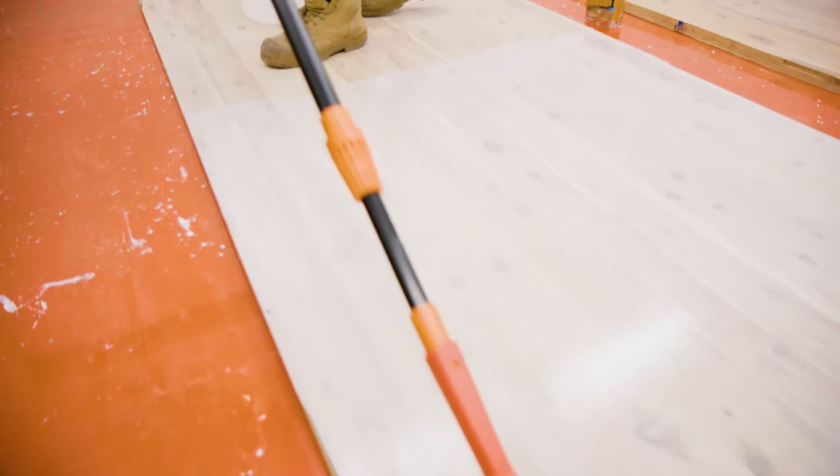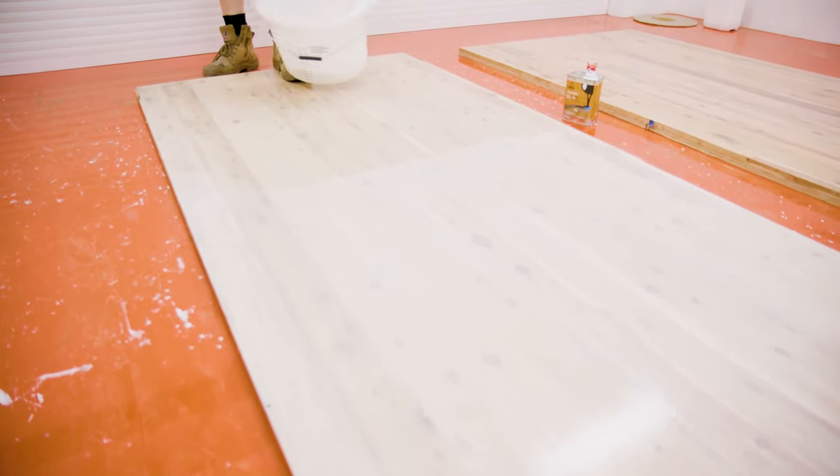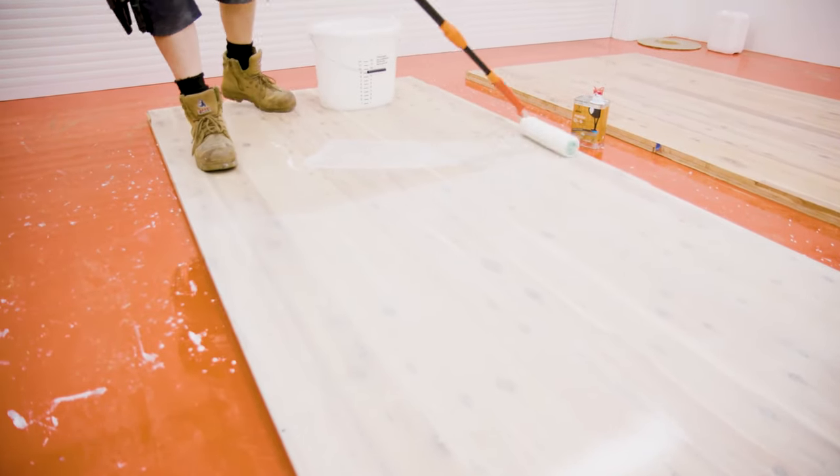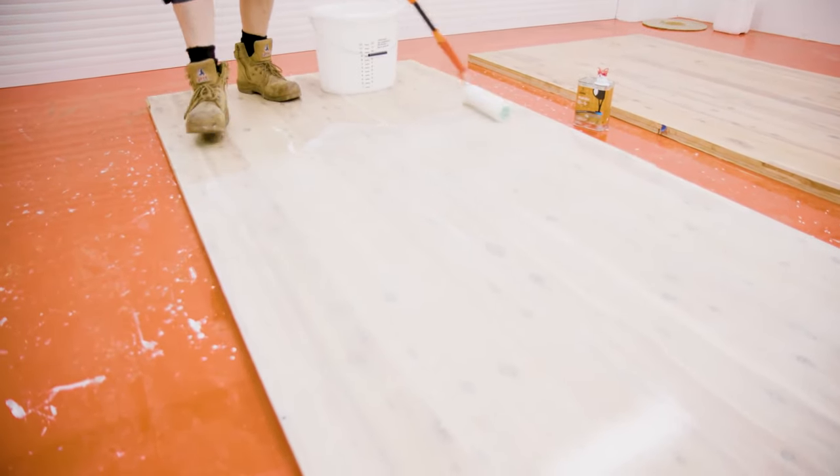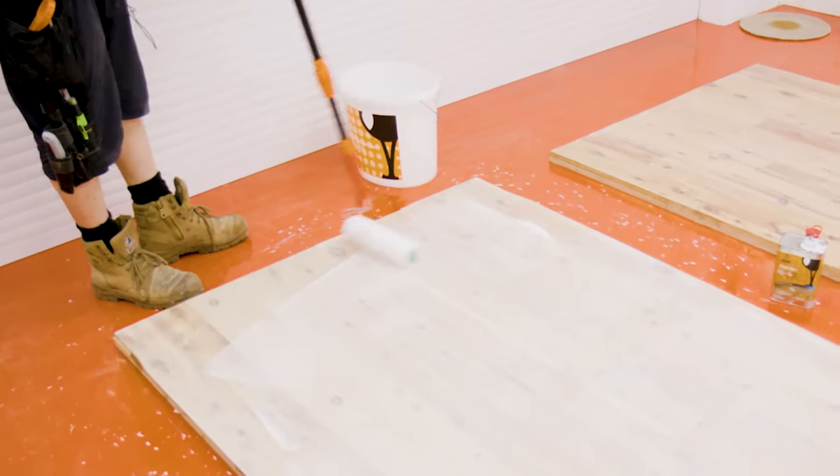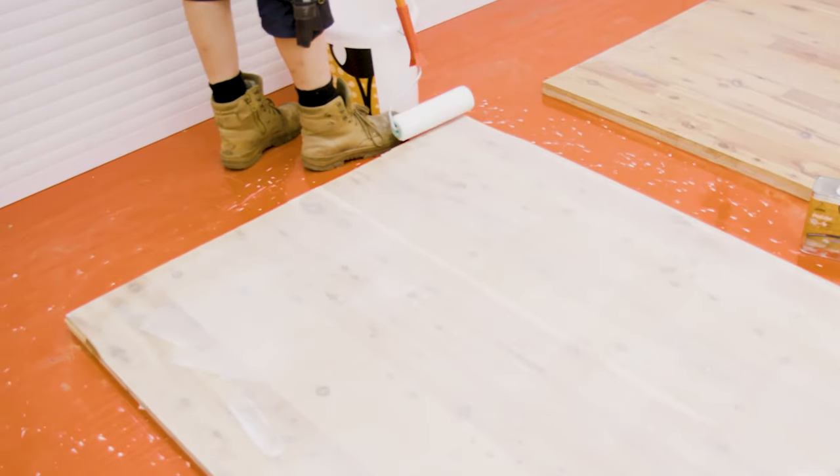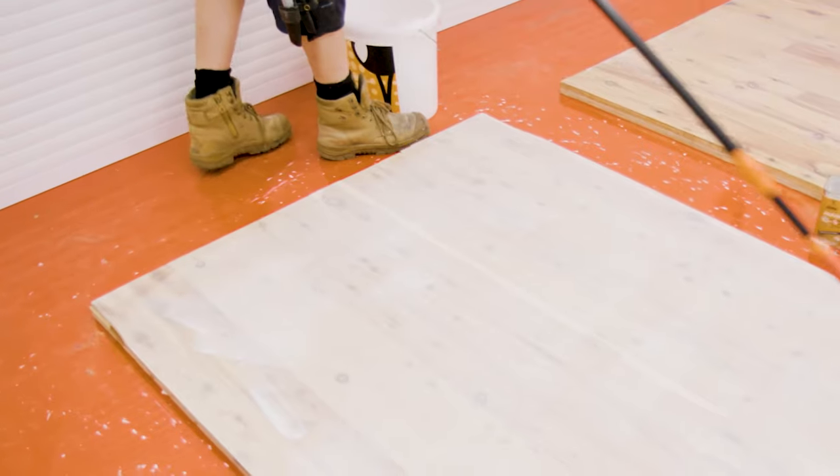Staining and tinting a floor can be a simple yet effective way to change its appearance. By following the steps outlined above, you can achieve a white stain on your cypress pine floorboards. Remember to be consistent and provide an even stain across the entire floor. With proper application and care, your newly stained floor will have a fresh and modern look.